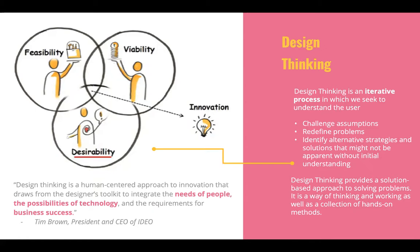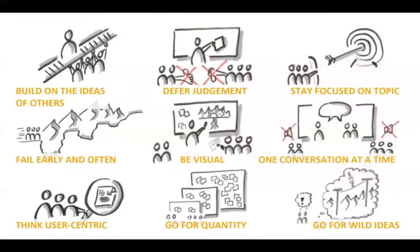The concept is that we challenge assumptions of what we think is right. We define the problem and look at strategies and solutions that might not be apparent without initial understanding. It's a solution-based approach to thinking about problems using hands-on methods. Some key characteristics: we want to defer judgment — really look at what the user and the human really think. We want to fail early and often, meaning we keep testing and finding different solutions. We're not afraid of failing — it's part of the process. We go for quantity, divergent thinking, and wild ideas: make them as crazy as possible.